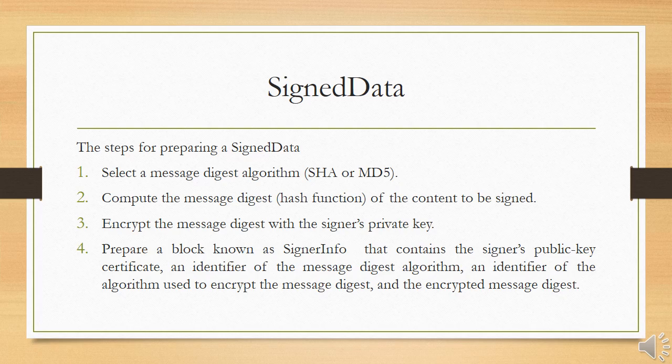The signed data entity consists of a series of blocks including a message digest algorithm identifier, the message being signed, and SignerInfo. The signed data entity may also include a set of public key certificates sufficient to constitute a chain from a recognized root or top-level certification authority to the signer. This information is then encoded into Base64. To verify the signature, the recipient strips off the Base64 encoding, the signer's public key is used to decrypt the message digest, the recipient independently computes the message digest and compares it with the decrypted message digest. If they match, the signature is valid.